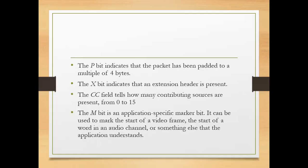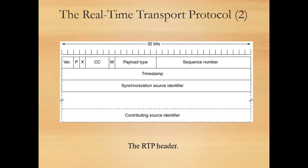Next is the CC field, which shows contributing sources. The CC field tells how many contributing sources are present, from 0 to 15. Since 2 to the power of 4 is 16, the CC field occupies 4 bits, allowing values from 0 to 15.